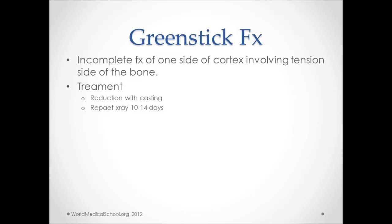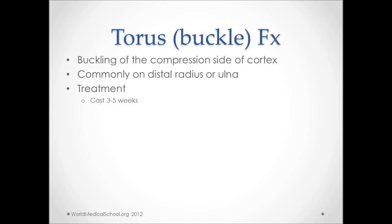A greenstick fracture is an incomplete fracture involving only one cortex — the tension side of the bone. Treatment includes reduction with casting and a repeat x-ray in 10 to 14 days. Torus, also called buckle fractures, result in buckling of the compression side of the cortex, commonly at the distal radius or ulna, and are likely due to trauma. Casting for three to five weeks is the treatment.